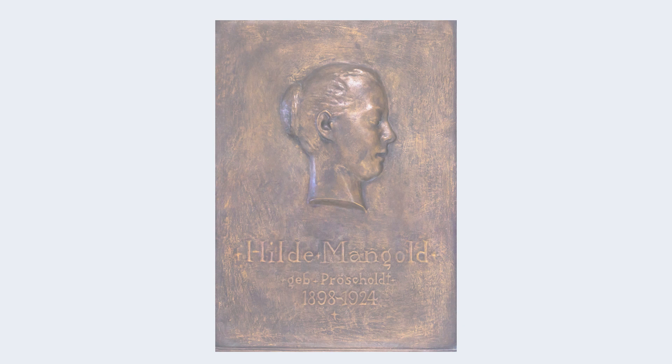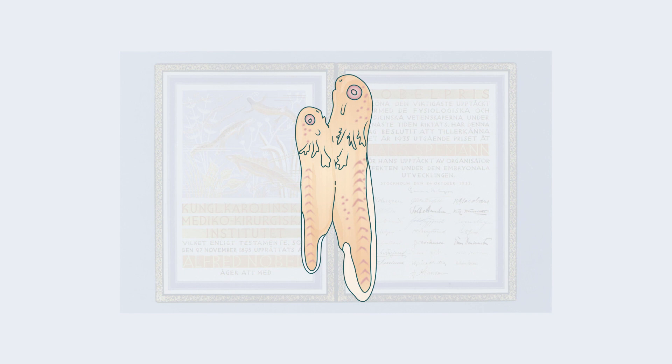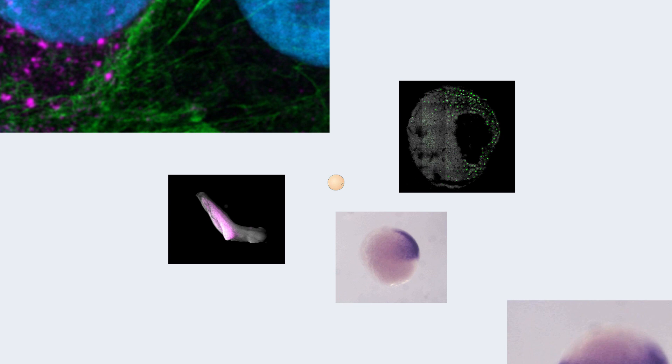Hans Spemann received the Nobel Prize in 1935 for the discovery of the organizer. With advancements in molecular biology and genetics, the value of Mangold's observation became even more clear. Her initial discovery had led to a search for the molecules involved in the organizer effect, and her experiments became the starting point for research into biological signaling.